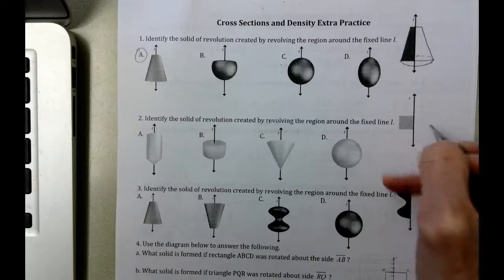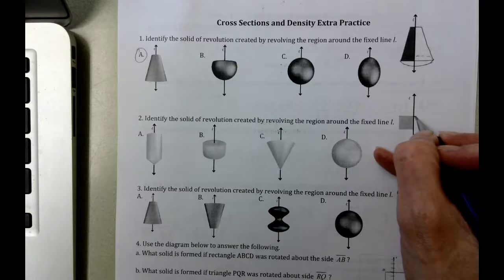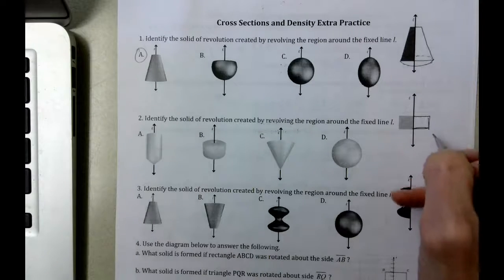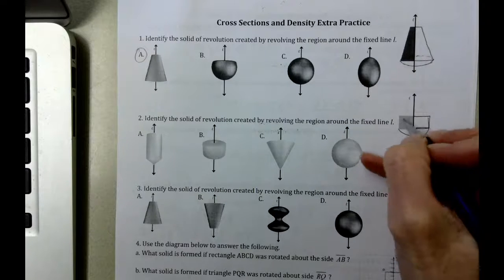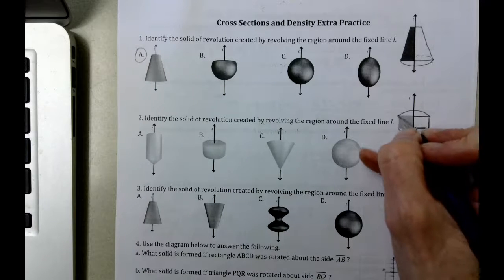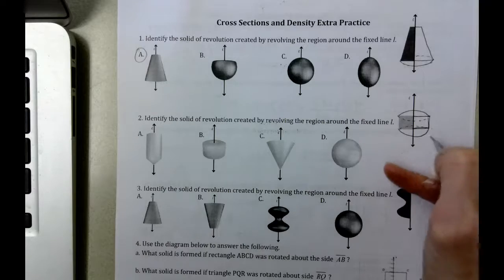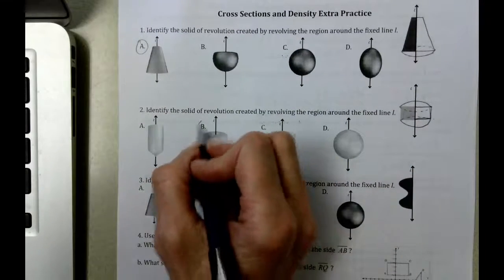Same idea on letter B. Identify the solid of revolution created by revolving the region around the fixed line. If we copy that figure, it didn't do very well. And then we connect the corners. And we can also then make it three-dimensional. It looks like our answer is a cylinder here, like letter B.